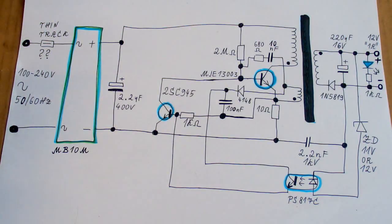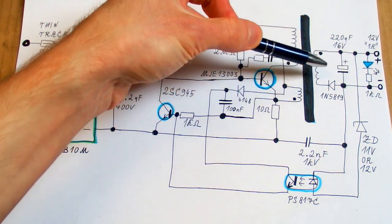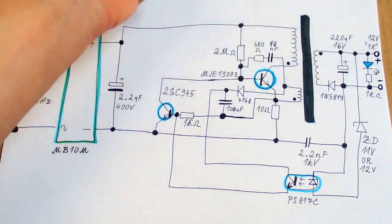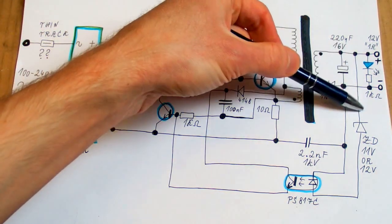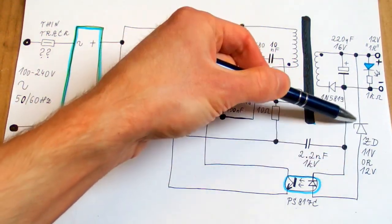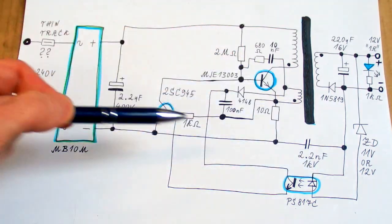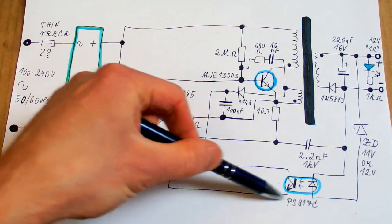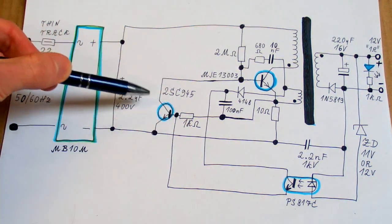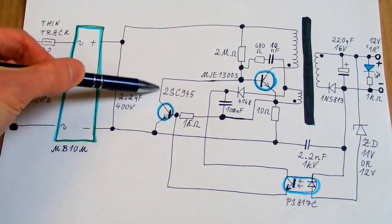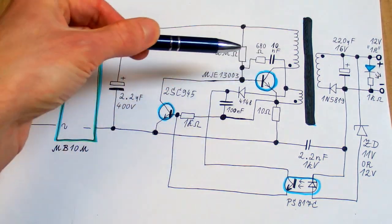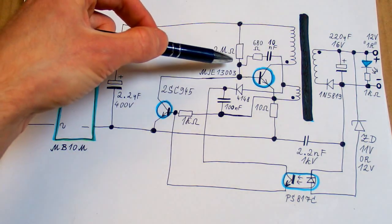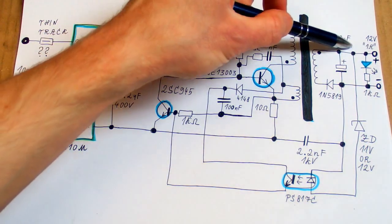On the secondary side there is a rectifying diode, which is a Schottky, the capacitor and some LED for indication. And there is the voltage regulation with just a zener diode and the optocoupler. And the transistor of it will feed some current into the base of this transistor. And it will again pull down the base of this one and turn it off earlier each cycle. By reducing the duty cycle and the power of the oscillator, it will keep the output voltage at the right level.